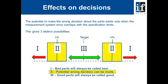When we make a decision about whether a component is good or bad, we have three opportunities to make a wrong decision. Only when the measurement system variation overlaps the process variation and the specification limits do we have problems. In situation one, bad parts will always be called bad. In situation three, good parts will always be called good. But in the two situations around the lower and upper specification limits, if our measurement system variation overlaps with our specification limits, then there is a possibility of wrong decisions being made.